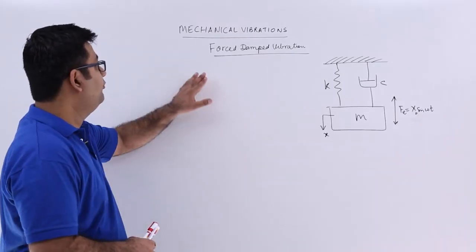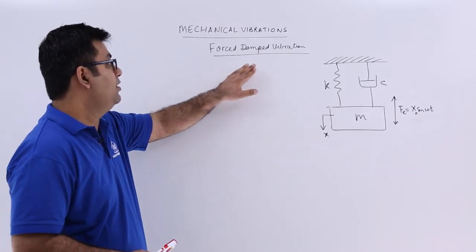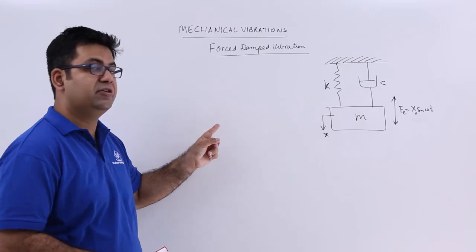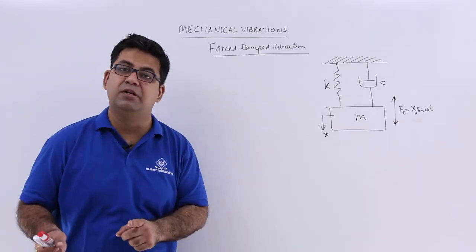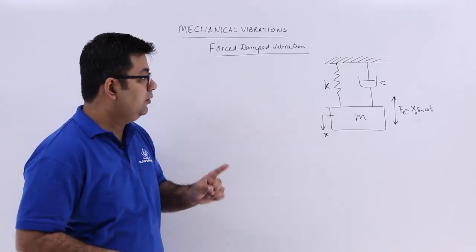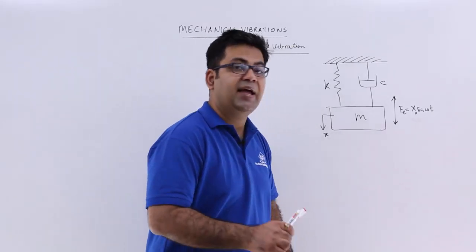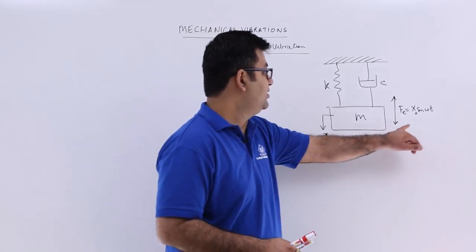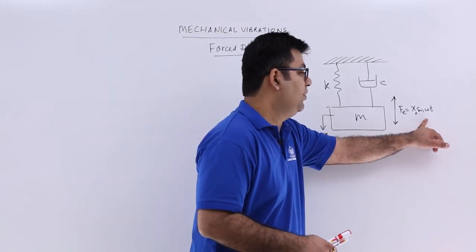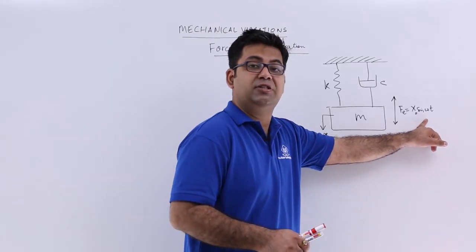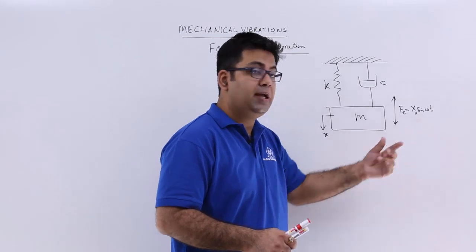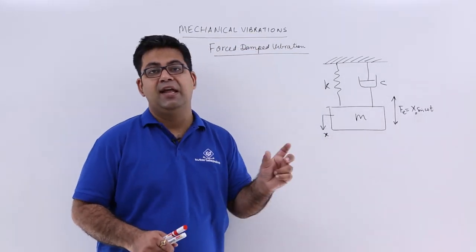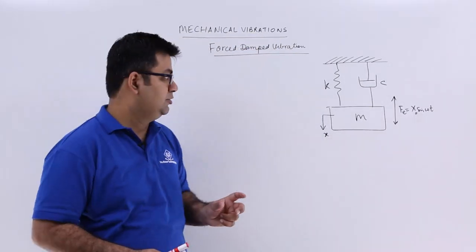Now let's talk about forced damped vibration. The difference of this kind of vibration from free vibration is that you need a continuous supply of an external disturbing force, which is x0 sin(vt), where x0 is the amplitude. We describe this as the external excitation force.